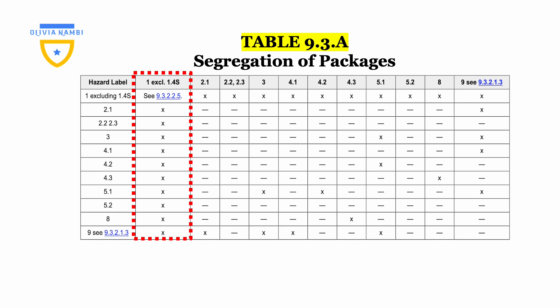Now we are going to understand the interpretation of x. An x at the intersection of a row and a column indicates that packages containing these classes or divisions of dangerous goods must be segregated. We see x again at 2.1, x again at 2.2 and 2.3, and the list goes on.